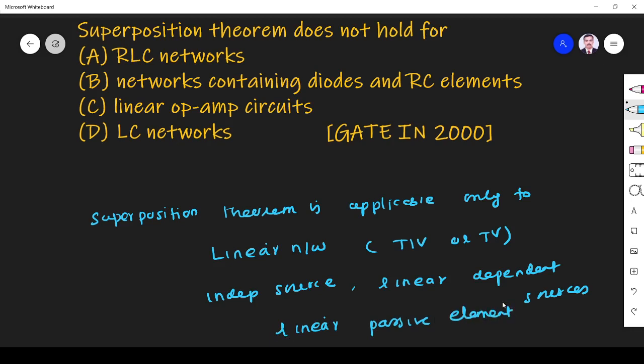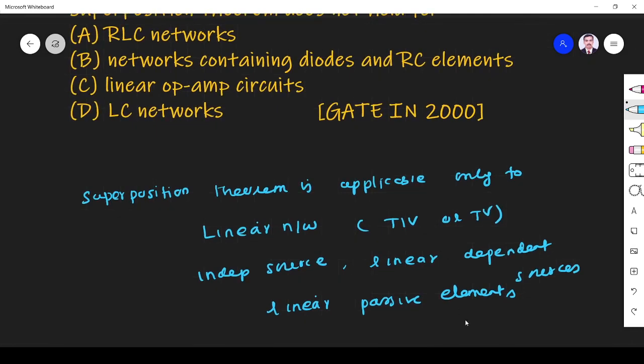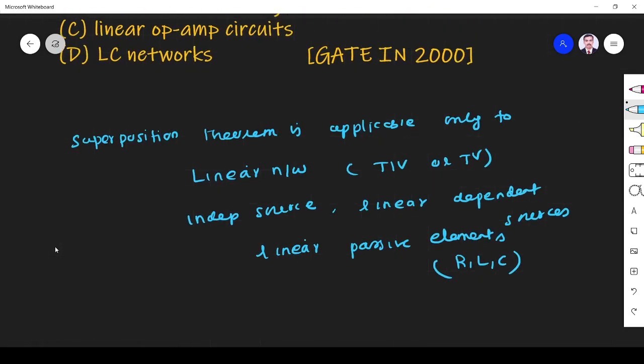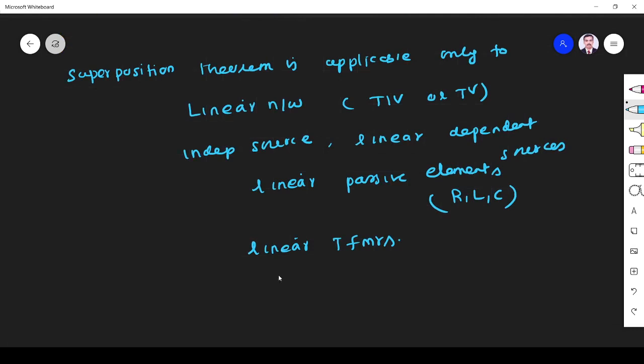What are those linear passive elements? If the circuit contains RLC, we can apply superposition theorem. If the circuit has linear transformers, we can also apply it. You can use it to find voltage and current, but not power.